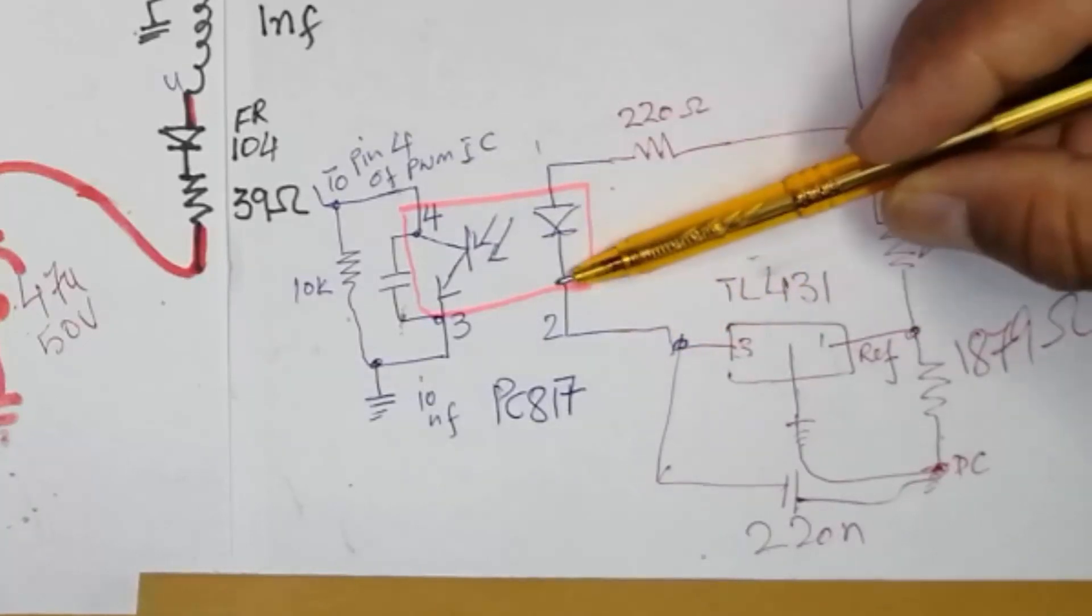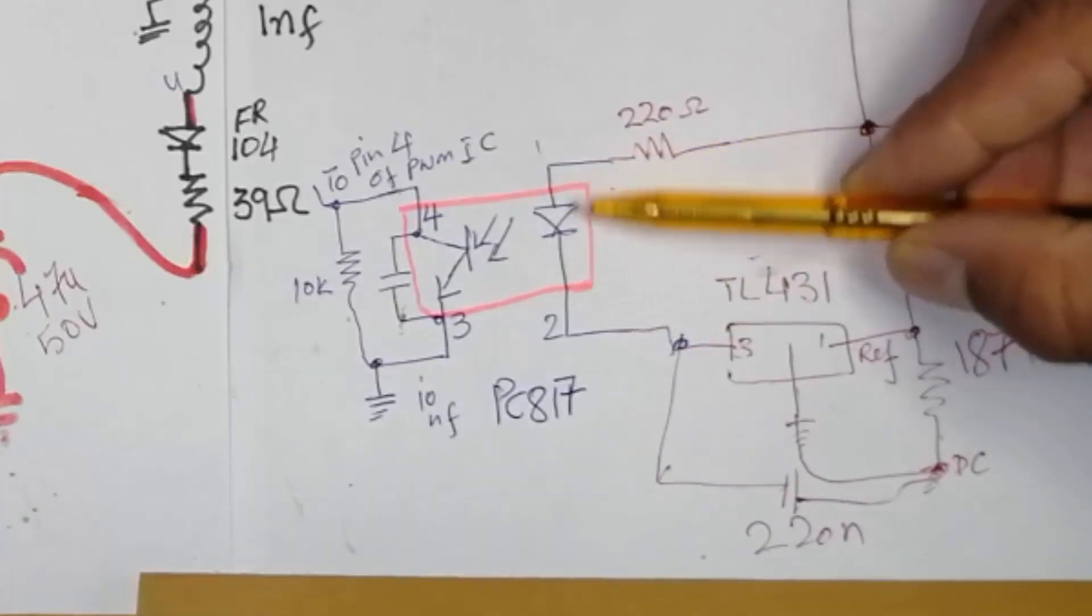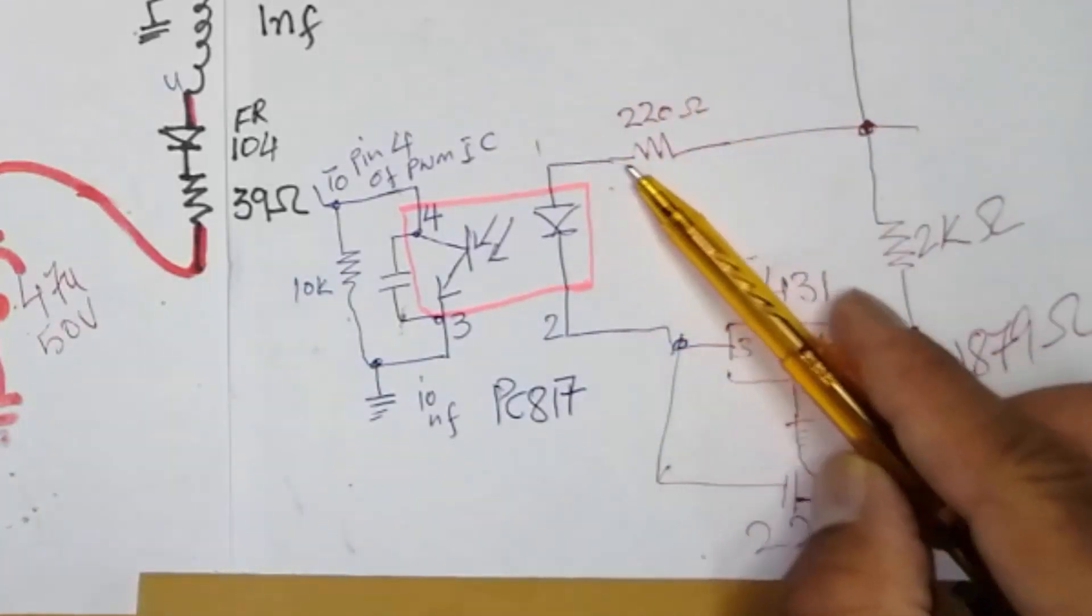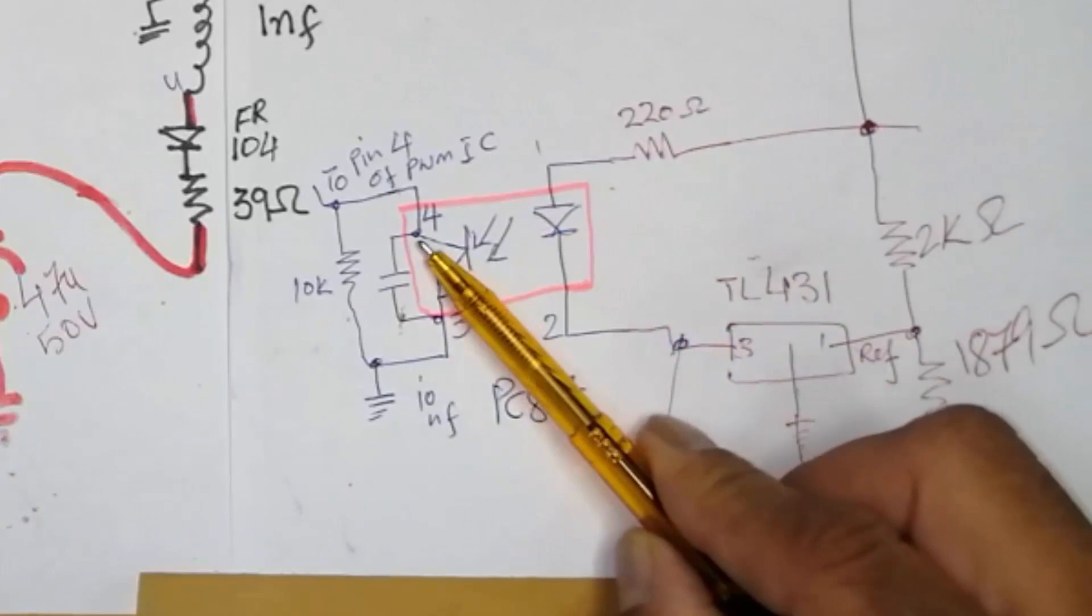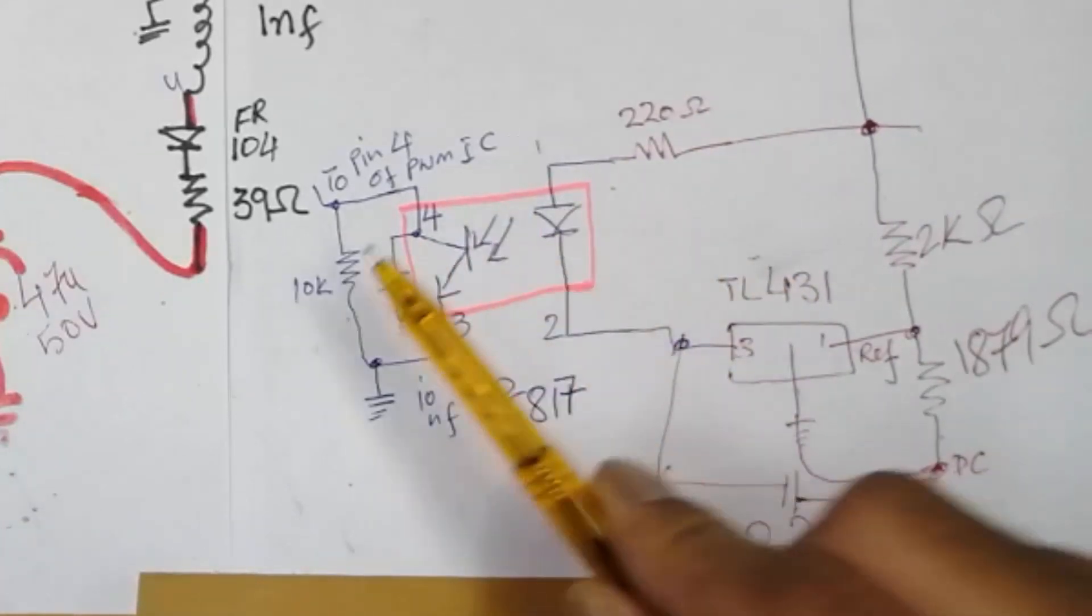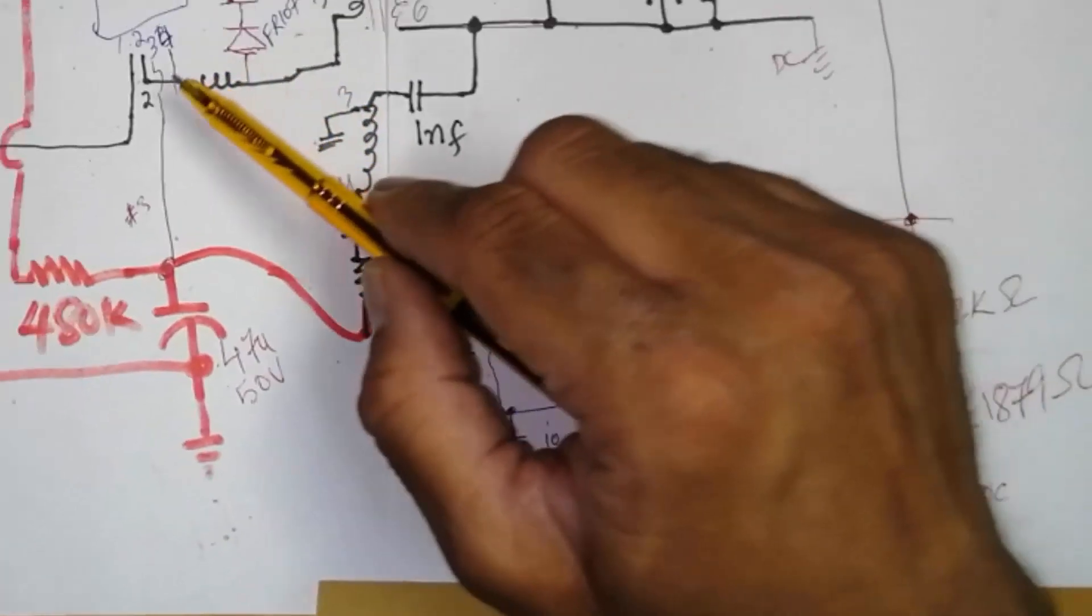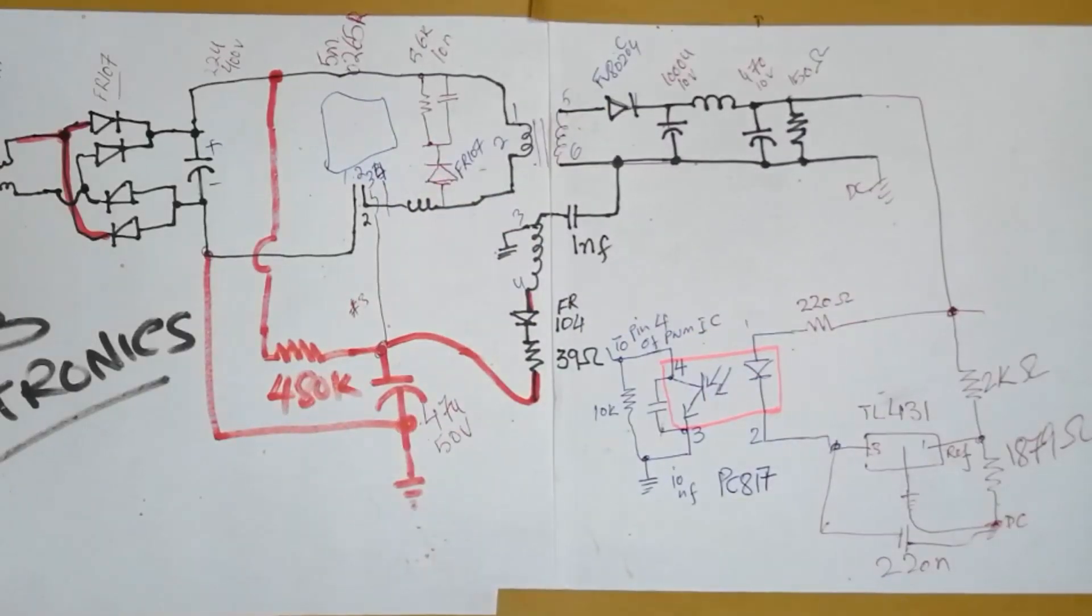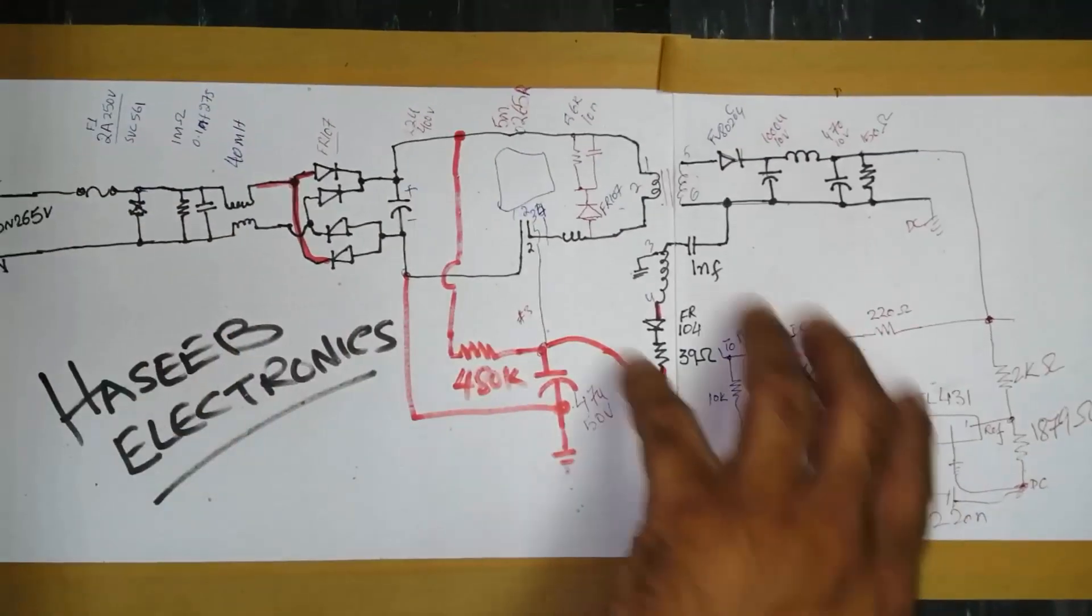Pin number 3 will apply 1.3 volt in output as a reference voltage. This reference voltage will cause to drop voltage of approximately one volt, and the remaining 0.3 volt will drop down this current limiting resistor. This optocoupler will conduct and we will get feedback voltage 0.3 volt at pin number 4. This is our circuit, this is our closed loop circuit.